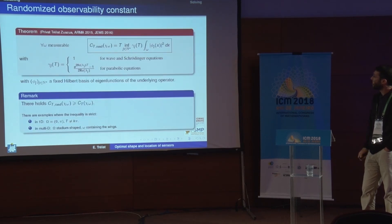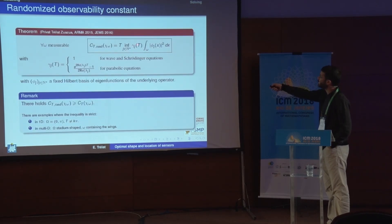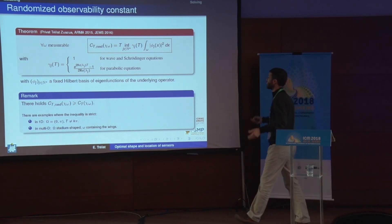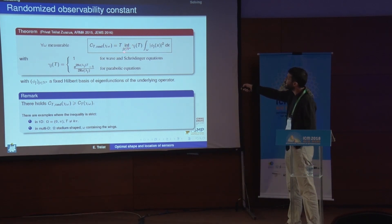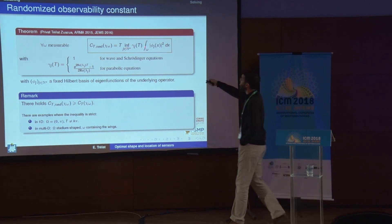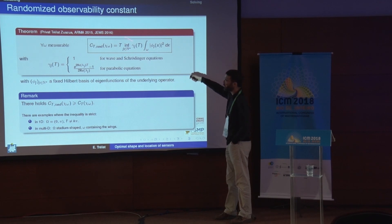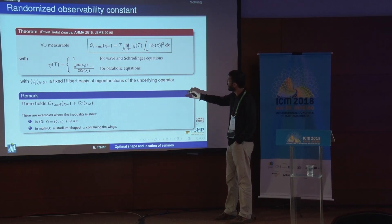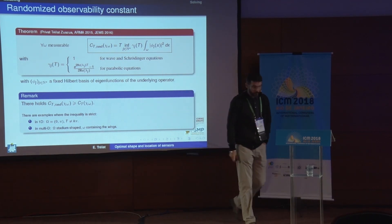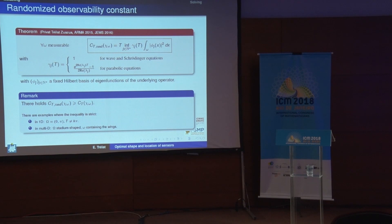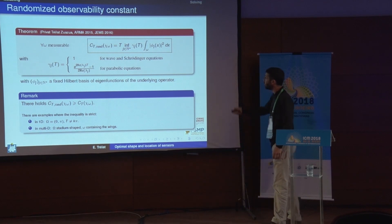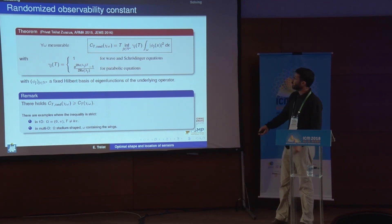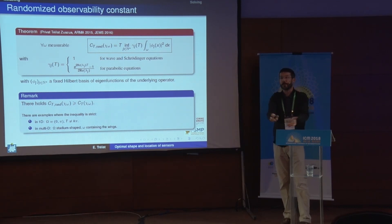The randomized observability constant has a nicer expression. It is the infimum over all possible modes of some weight gamma_j(T) times the integral over small omega of the square of phi_j, the j-th eigenfunction. The weight gamma_j(T) depends on the PDE: for wave and Schrödinger equations the weights are constant, while for parabolic equations the weights gamma_j grow exponentially with respect to the eigenvalues.